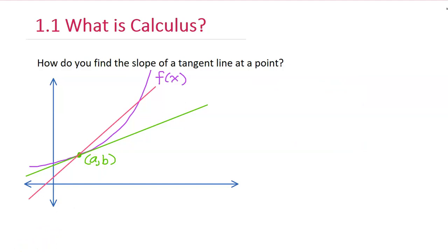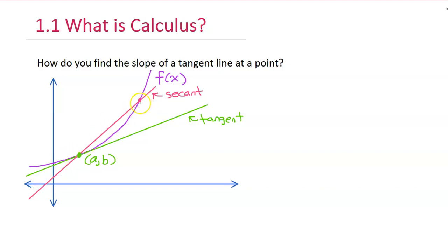The big idea behind calculus is that you can start with an approximation and then improve that approximation little by little until it becomes the exact answer. So in this case, we're going to draw a secant line. This red line that I've drawn would be called a secant line, and of course the green line is our tangent. The slope of the secant line is not the same thing as the slope of the tangent line, but we can use it as an approximation and then improve it, getting closer and closer to the slope of the tangent line.